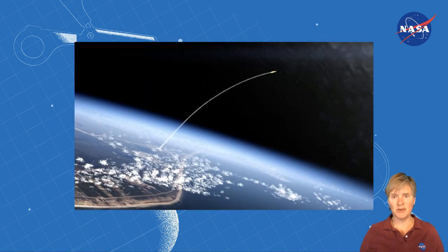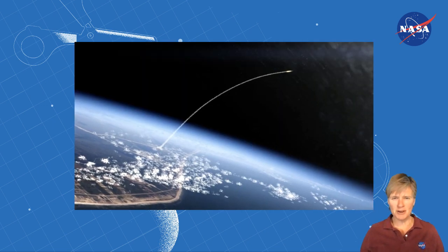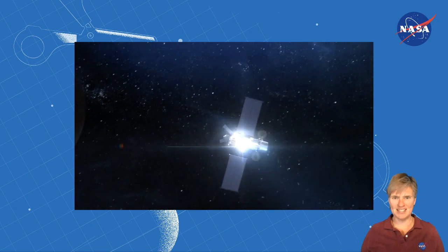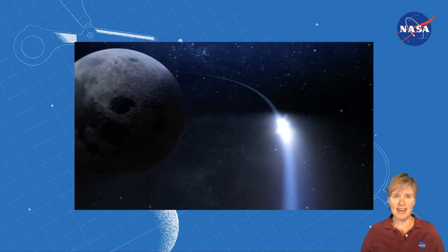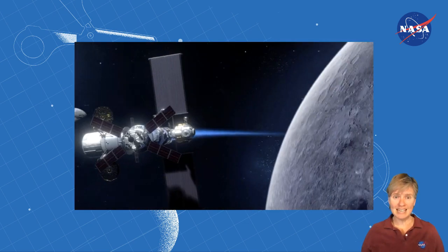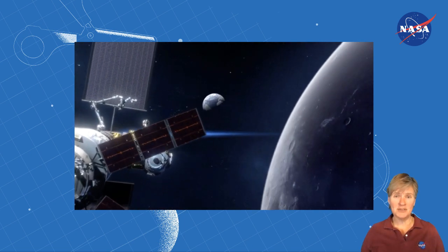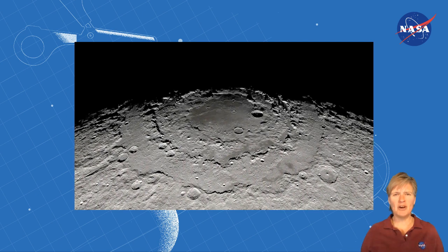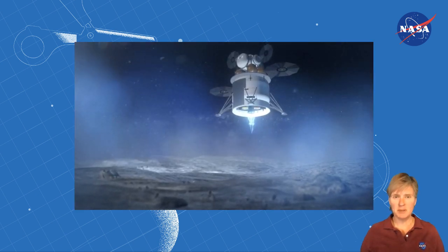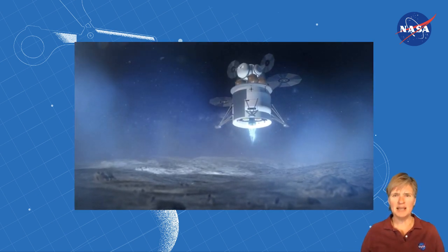NASA's Artemis program will launch astronauts from Earth to a moon-orbiting gateway station. From this gateway, astronauts will fly on a lunar lander to land on and explore the moon. As you can see, it's necessary to understand the motion of all the objects involved: the spacecraft, the lander, and the planet.